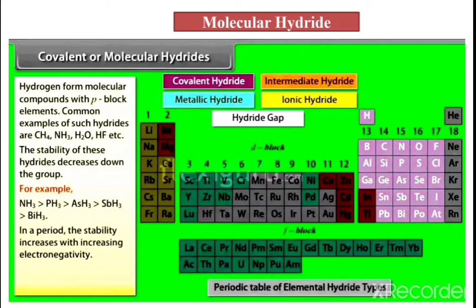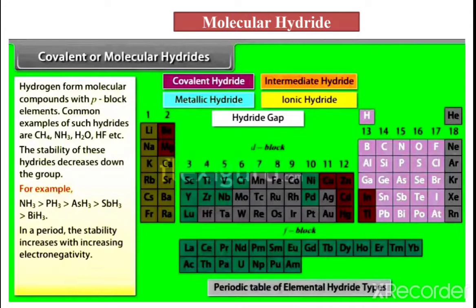Molecular hydrides form with P-block elements. The stability of these hydrides decreases down the group. For example, in group 15: NH3, then PH3, AsH3, SbH3, then BiH3 — stability decreases down the group. If we consider a period, the stability of these hydrides increases with increasing electronegativity. In the periodic table, left to right electronegativity increases, and the stability of the hydride in the period also increases.